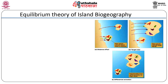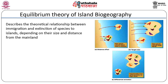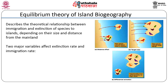Equilibrium theory of island biogeography: the equilibrium theory describes the theoretical relationship between immigration and extinction of species to islands depending on their size and distance from the mainland. The theory builds on the first principles of population ecology and genetics to explain how distance and area combine to regulate the balance between immigration and extinction in island populations. Two major variables thought to affect extinction rate and immigration rate are: the size of the island, and the distance from the mainland.